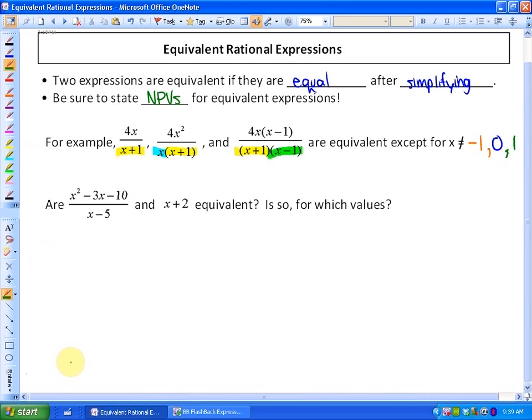So in order to find that out, all we're going to do is simplify each of the rational expressions. This x plus 2 is as simple as it gets. However, this guy here, we can try and factor. The numerator, in fact, can be factored to x minus 5 and x plus 2.